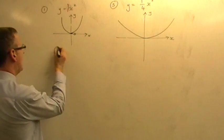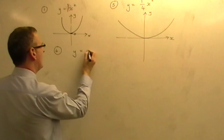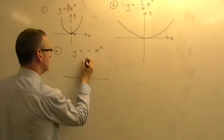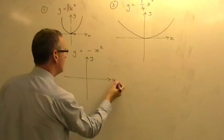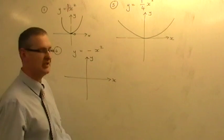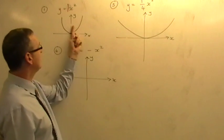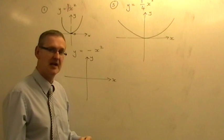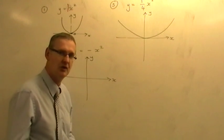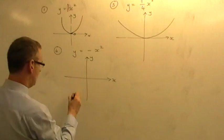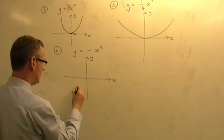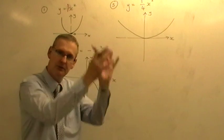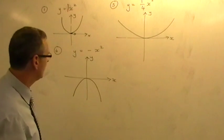Number six: y equals minus x squared. The effect of putting the minus there is to take the basic x squared graph and flip it upside down — reflect it in the x-axis. You get exactly the same shape but reflected upside down. There's no number on the end, so it doesn't move up or down at all. That's minus x squared.